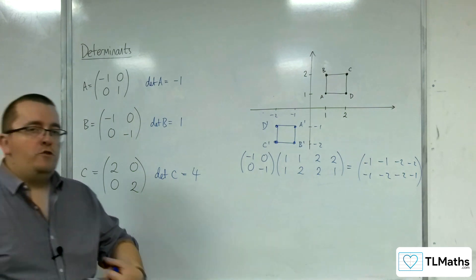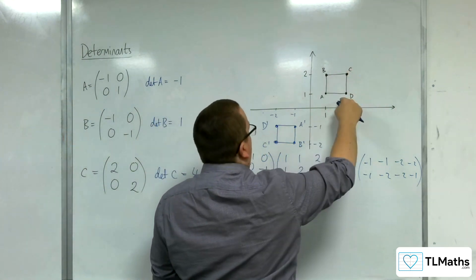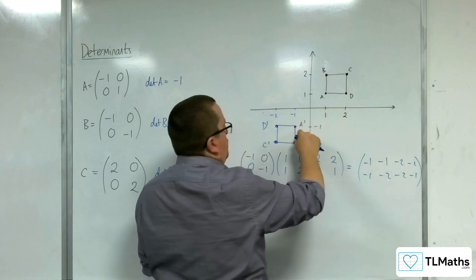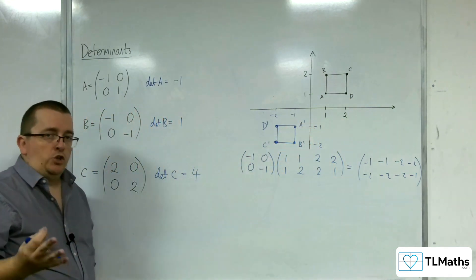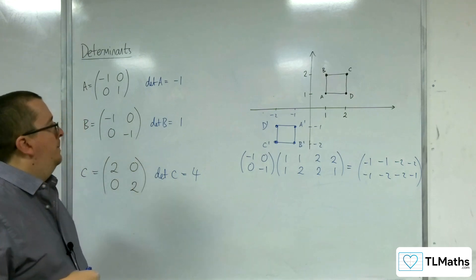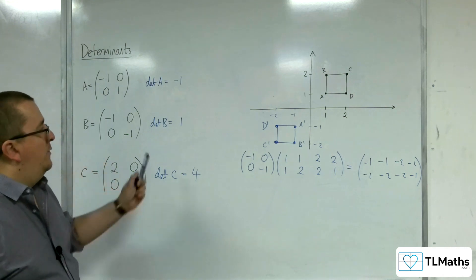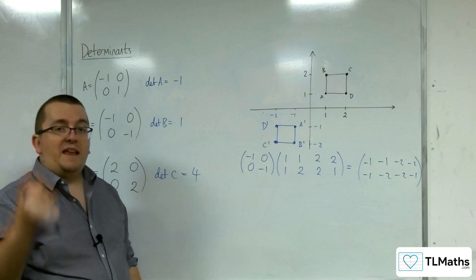Now, look at the orientation, how we're reading the coordinates. So A, B, C, D going clockwise; A prime, B prime, C prime, D prime going clockwise. So the rotation did not change the orientation of the vertices. And you can tell that straight from the determinant being positive rather than negative.